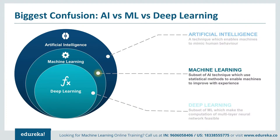Machine learning is a subset or a current application of AI. It is based on the idea that we should give machines access to data and let them learn by themselves. It's a subset of artificial intelligence that deals with the extraction of patterns from datasets. This means the machine can not only find the rules for optimal behavior, but also adapt to changes in the world. Many of the algorithms involved have been known for decades — centuries even — and thanks to advances in computer science and parallel computing, they can now scale up to massive data volumes.